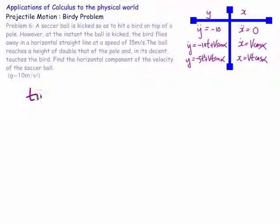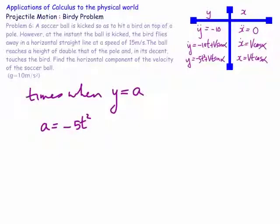So the times when y is equal to a: we let a equal minus 5t² plus vt sine alpha. If we form the quadratic we end up getting 5t² minus vt sine alpha plus a equals zero.